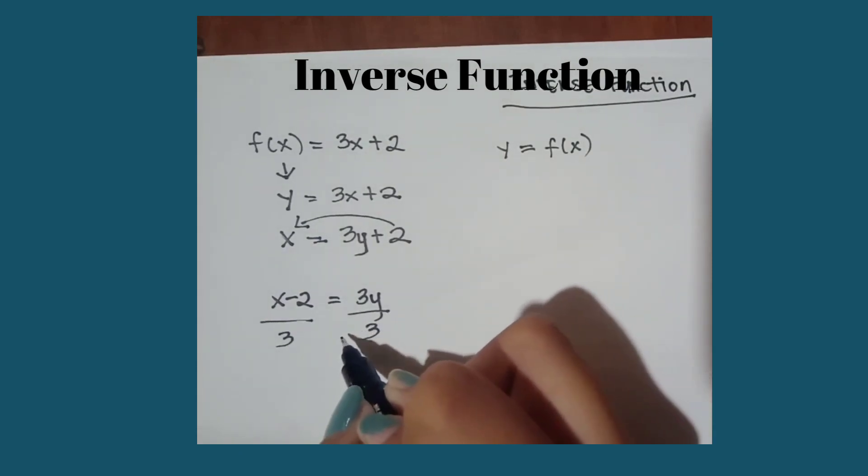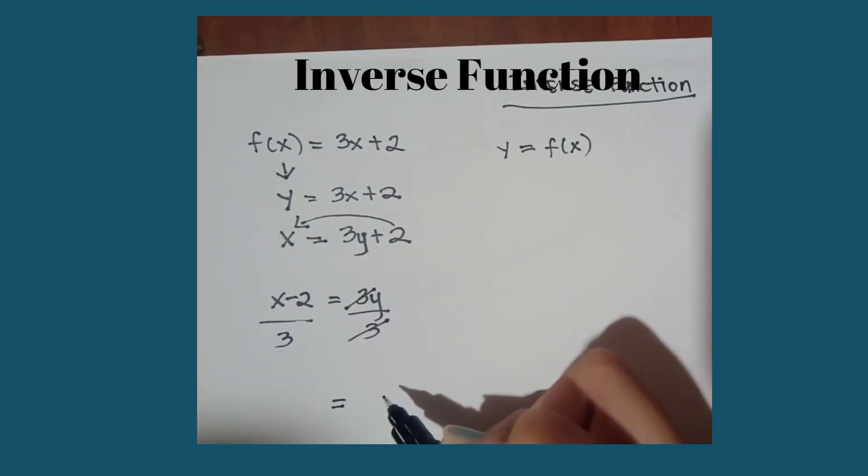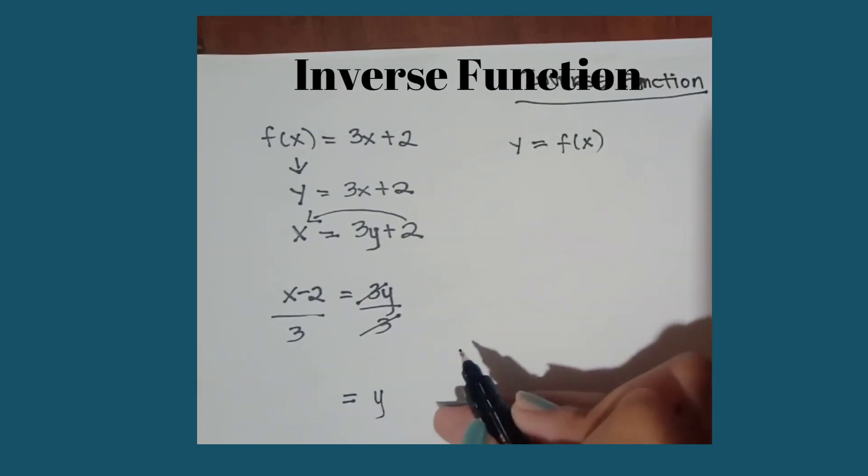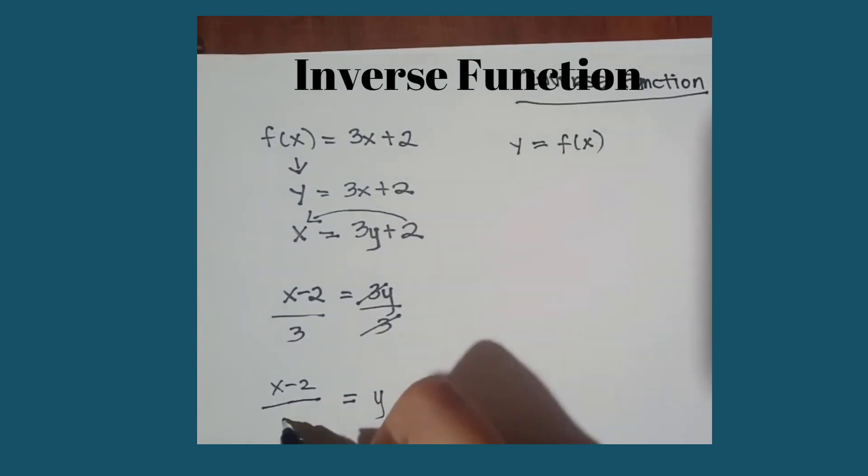And then cancel 3 and 3. Now we have the variable of y, then x minus 2 over 3 here.